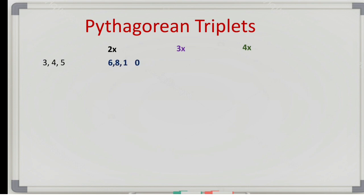3 into 2 is 6, 4 into 2 is 8, 5 into 2 is 10. Then go for 3 times: 3 into 3 is 9, 4 into 3 is 12, 5 into 3 is 15. Then take 4 times: 3 times 4 is 12, 4 times 4 is 16, 5 times 4 is 20.